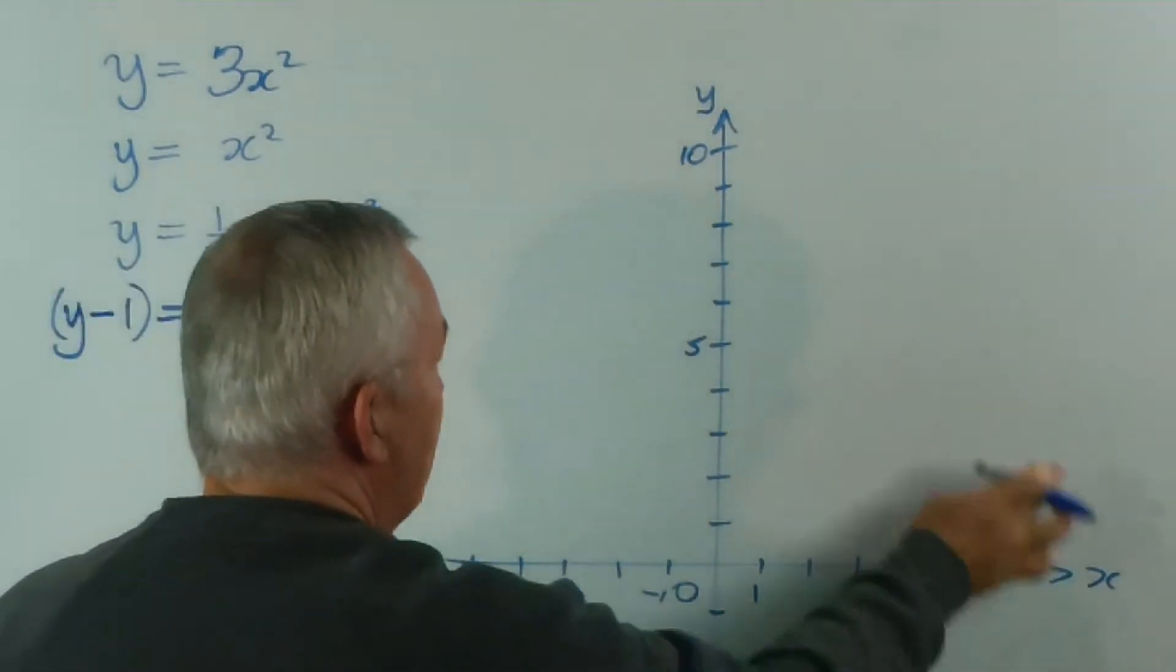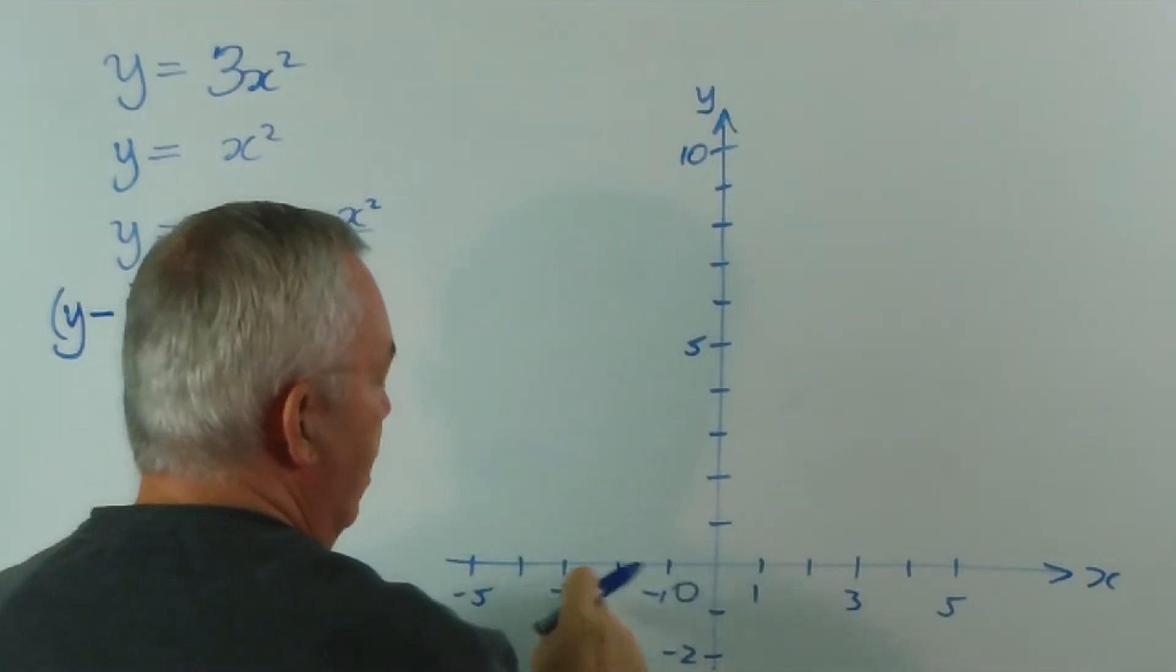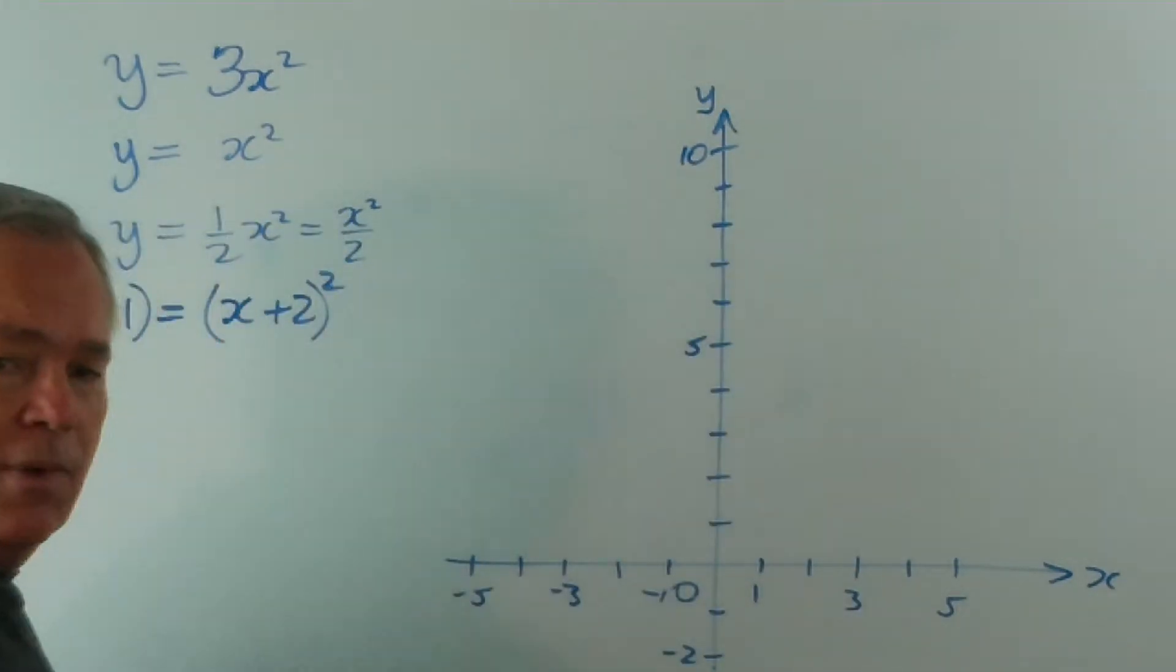Okay, we have our axes labelled, we have the origin, we have a scale on both of our axes, and we're going to graph this.